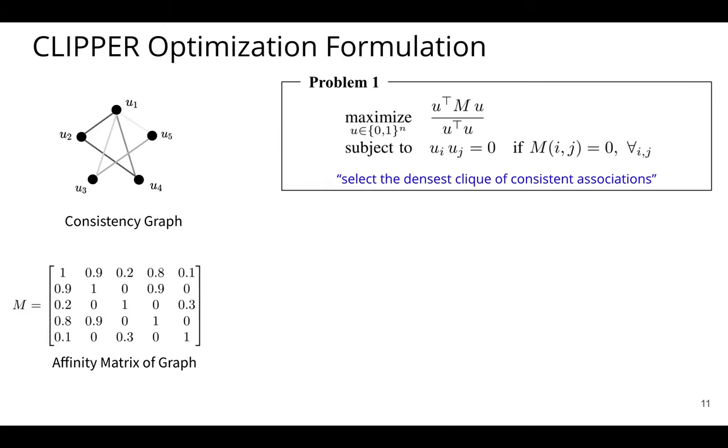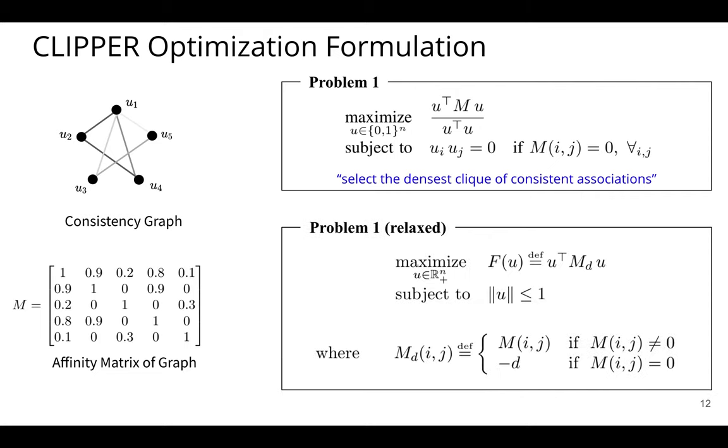And here's a mathematical formulation of that statement. The objective here, this Rayleigh quotient like objective, is over the binary domain, and that encodes the density of the subgraph. And it's subject to this clique constraint here. And so in English, this is to select the densest clique of consistent associations. And as we've talked about, this being over the binary domain is an NP-hard problem.